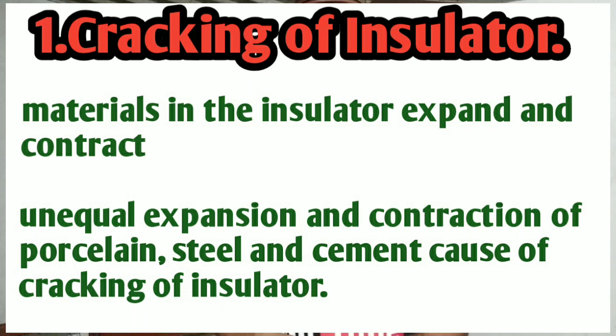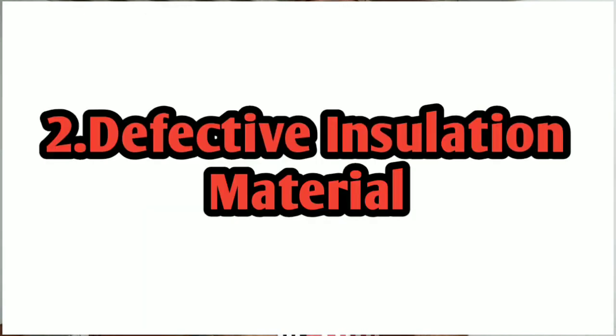The insulator becomes defective. When insulators are defective, they can cause damage. We use insulators on power lines, distribution lines, and transmission lines. If the insulator is defective, the current-carrying conductor is going to have leakage.